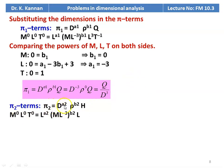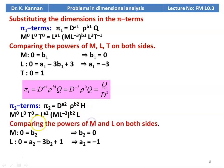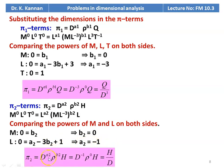For pi2 = D^a2 · rho^b2 · H: M⁰L⁰T⁰ = L^a2 · (ML⁻³)^b2 · L. Comparing powers: for M, b2 = 0; for L, 0 = a2 − 3b2 + 1, giving a2 = −1. So pi2 = D⁻¹ · rho⁰ · H = H/D.